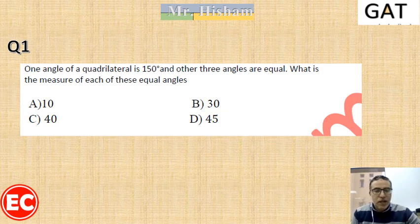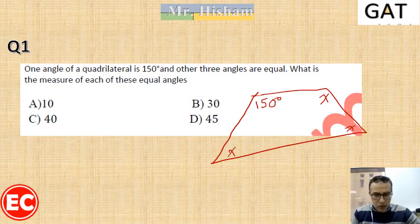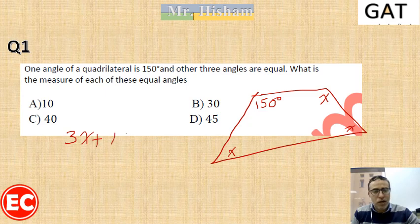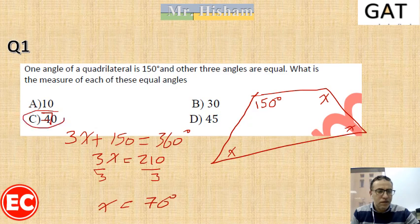Example: one angle of a quadrilateral equals 150 degrees, and the other three angles are equal — call each one X. The sum of interior angles of a quadrilateral is 360 degrees. So 3X plus 150 equals 360. Subtracting 150 from both sides gives 3X equals 210. Dividing by 3, X equals 70 degrees. So each of the three equal angles measures 70 degrees.